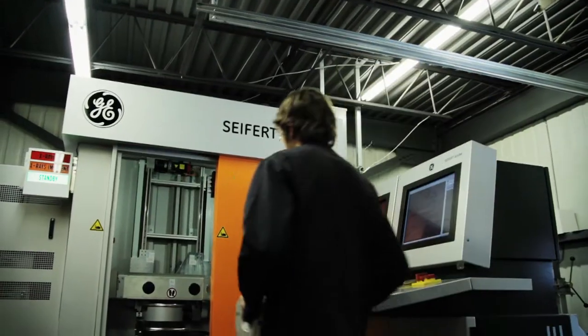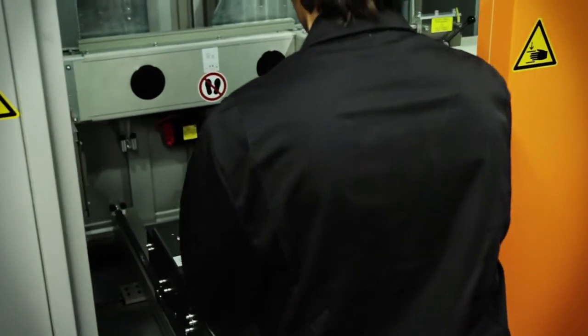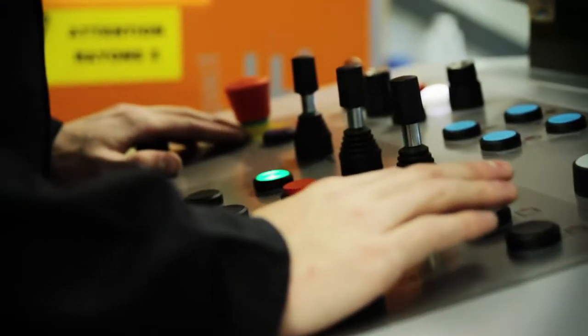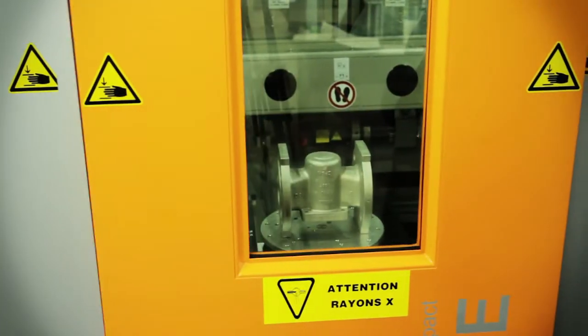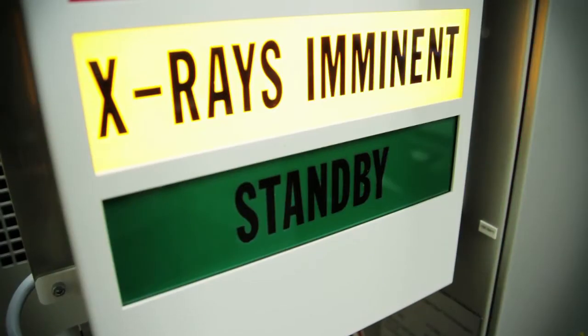First, a technician places the part being inspected in the device enclosure. This enclosure is reinforced with lead sheets to prevent radiation from spreading outside of the enclosure walls.